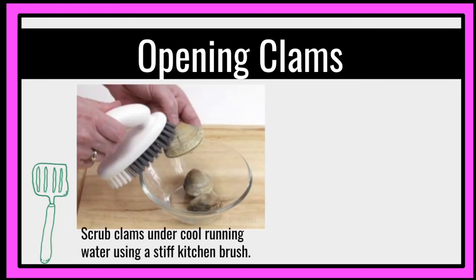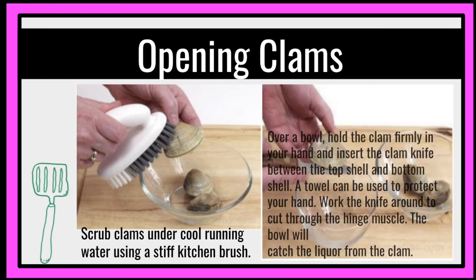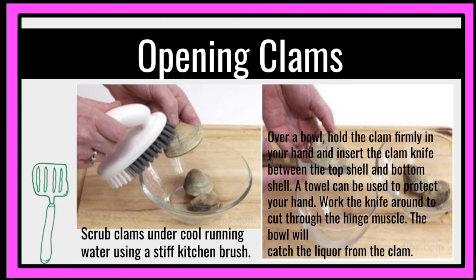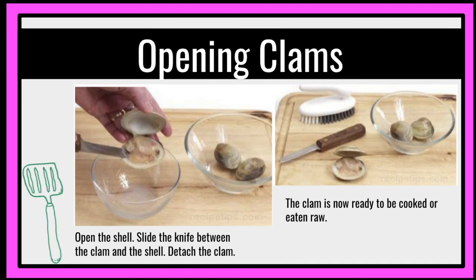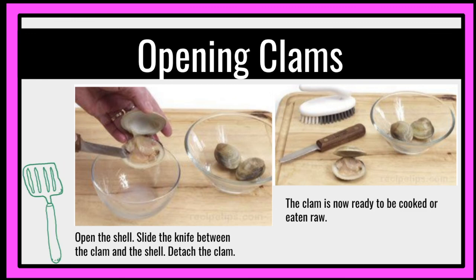How are we going to open clams? First, scrub clams under cool running water using a stiff kitchen brush. Bent over a bowl, hold the clam firmly in your hand and insert the clam knife between the top shell and bottom shell. A towel can be used to protect your hand, or you can also wear gloves. Work the knife around to cut through the hinge muscles. The bowl will catch the liquor from the clam. Open the shell, slide the knife between the clam and the shell, and detach the clam. The clam is now ready to be cooked or eaten raw.